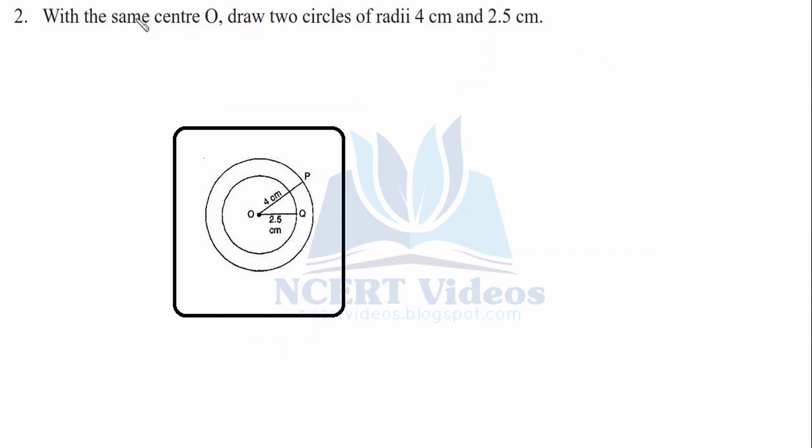Second, with the same center O, now the center should be the same, draw two circles of radii 4 cm and 2.5 cm. That is, you don't have to pick up your marking from this point O. You have to draw two circles from the same point O.